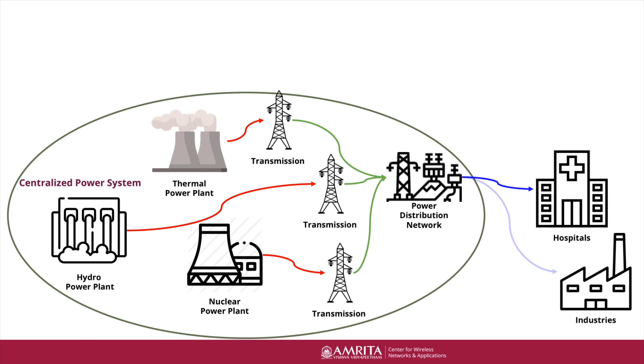When we contrast this to a microgrid, the microgrid — as its name suggests — is a scaled-down version of the power grid. It is typically a low-voltage system restricted to a smaller geographical area. We can define a microgrid as a group of interconnected loads and distributed energy resources restricted to a smaller geographical area, which may or may not be connected to the centralized power grid.